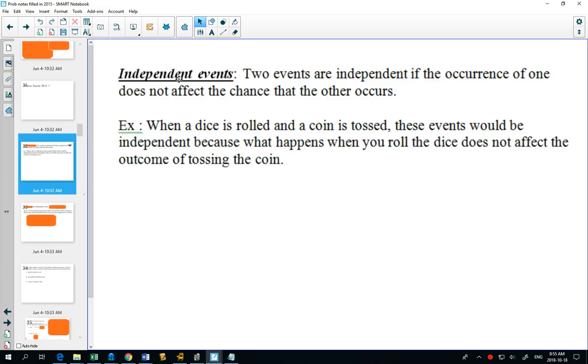We're going to continue with our probability definitions today, starting with independent events. Two events are independent if the occurrence of one does not affect the chances of the other.